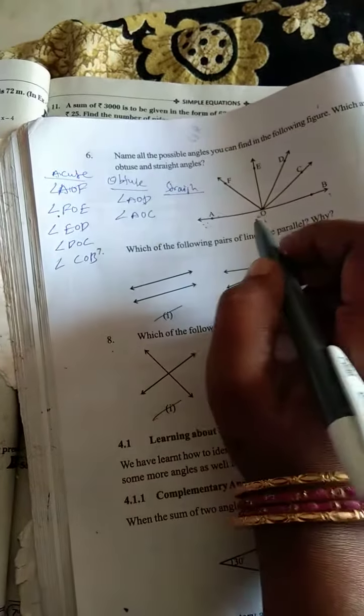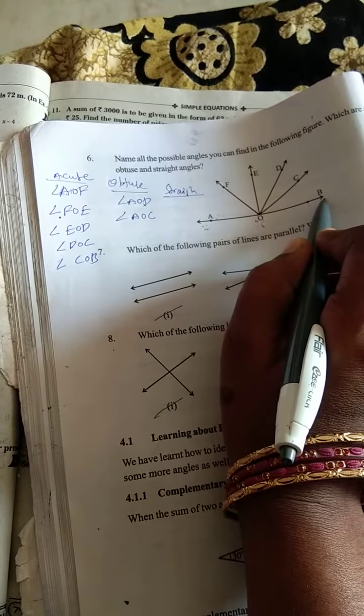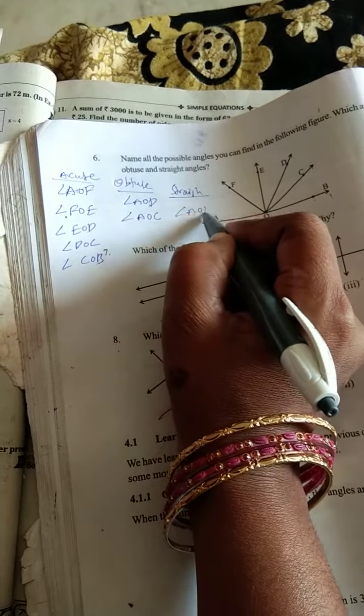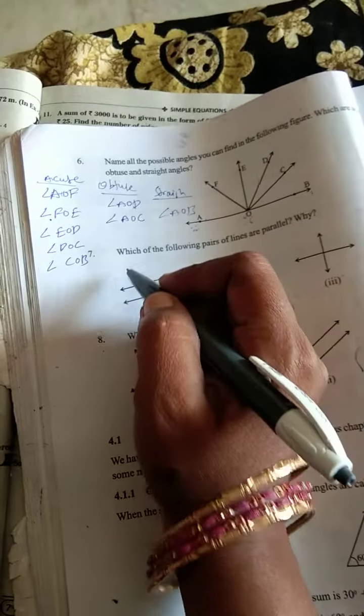Straight angles. What are they? Straight angle A, O, B. A, O, B is a straight angle. This is the answer for that.